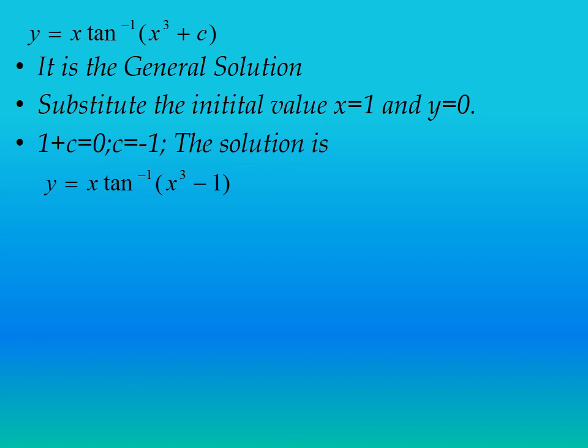Now substitute the initial value x = 1, y = 0. This gives c = -1. So the particular solution is y = x·tan⁻¹(x³ - 1).